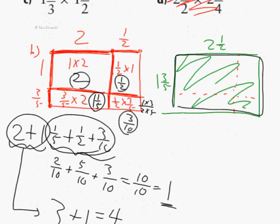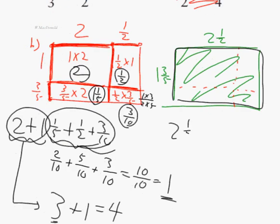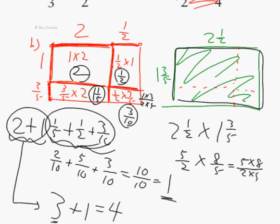Looking at that question again: 2 and a half times 1 and 3 fifths. Using the algorithm and changing to improper fractions: 5 halves multiplied by 8 fifths. Multiply the numerators — 5 times 8 — and the denominators — 2 times 5 — giving 40 over 10, which is 4. Same answer.